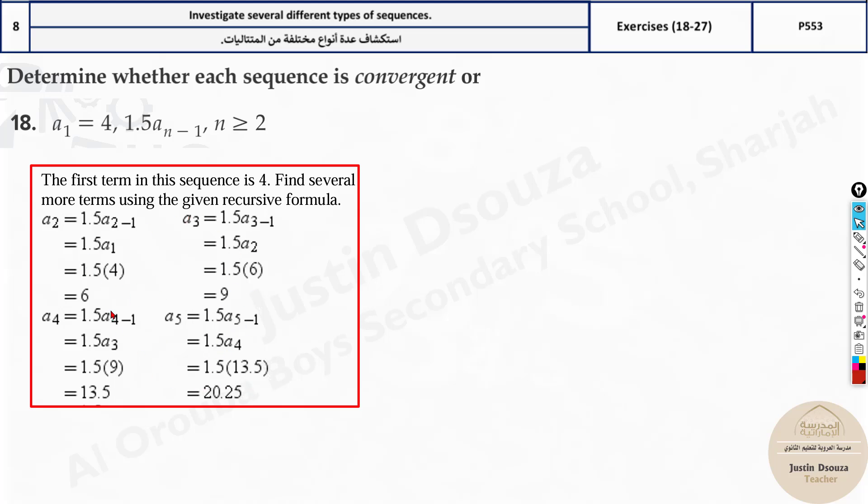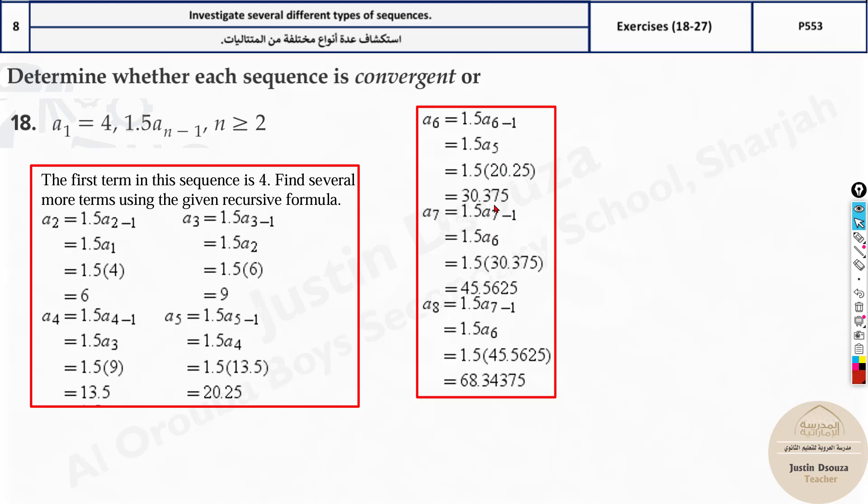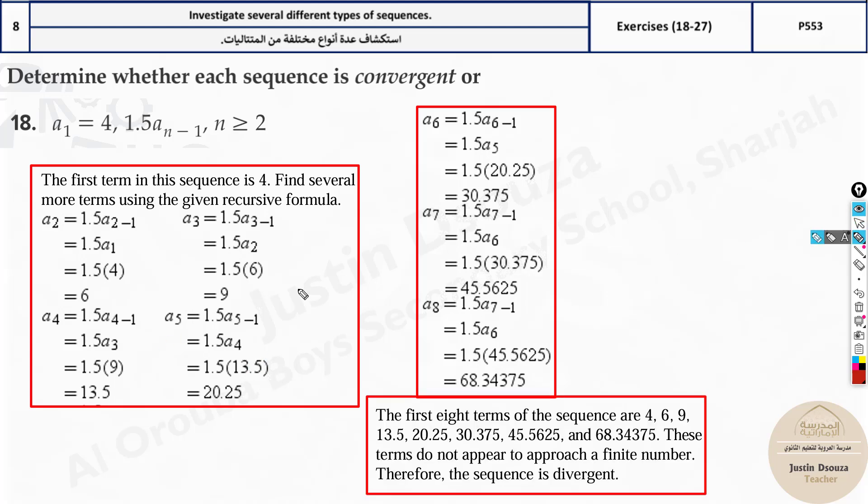See the values - 6, 9, 13, 20.25. What is the pattern? It keeps on increasing. If you go further, it just keeps on increasing. With just 4 to 5 values, you understand the trend. If you graph this - see, this is MCQ, you don't need to graph - but if you graph this, the values start at 4 and keep increasing like this.